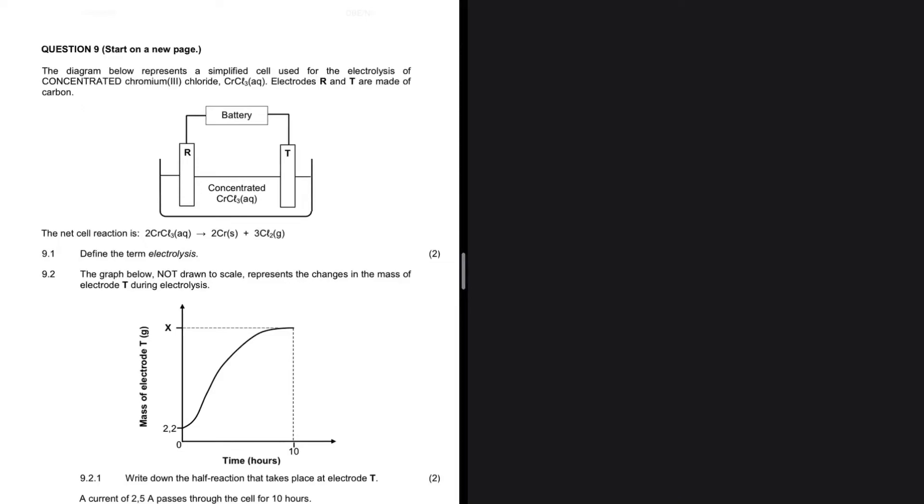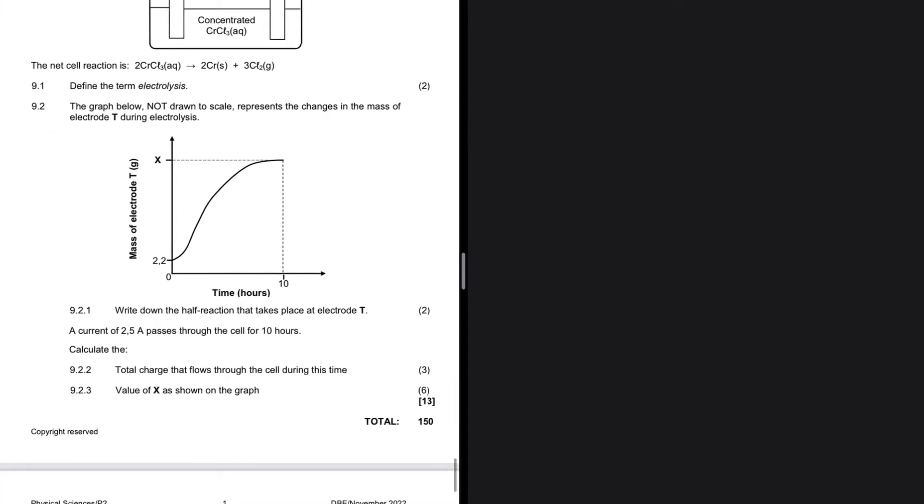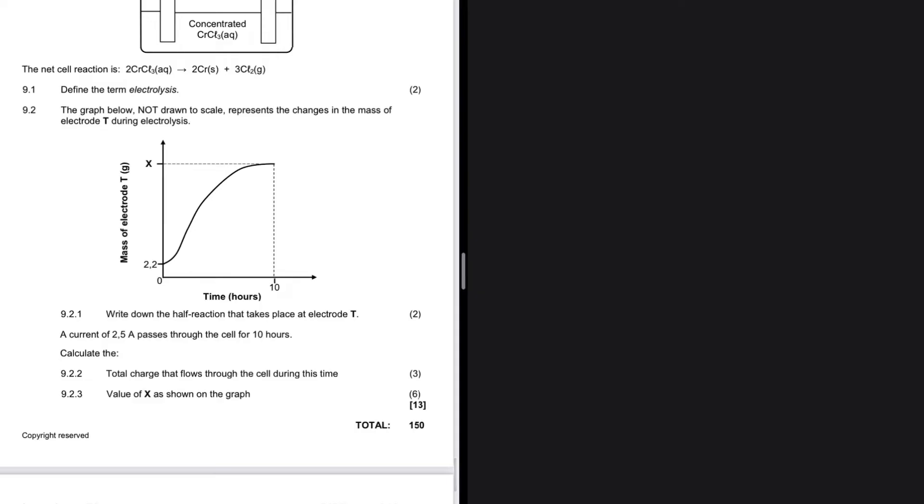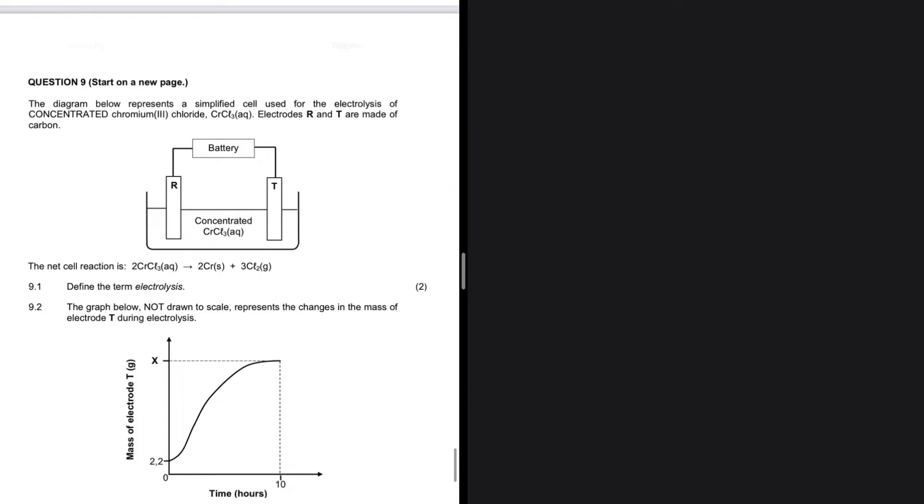This is quite a unique and special question, but especially when you take a look at 9.2.3. We're supposed to calculate the value of x as shown on the graph for 6 marks. What is the information we have? We have the current, which is 2.5 ampere, and the time, which is 10 hours. How do we go from current to time to x on the graph, which is basically the mass of the electrode? Well, we're about to find out.